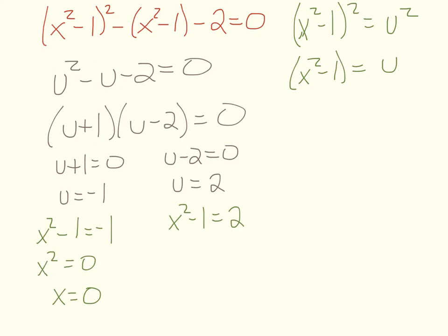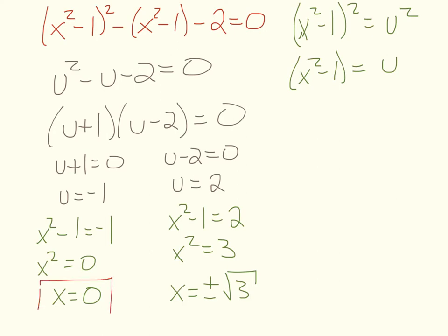Adding 1 to both sides of the first equation gives x squared equals 0, so x equals 0. Note that zero is neither positive nor negative, so there's no plus or minus. For the second equation, adding 1 gives x squared equals 3, and taking the square root gives x equals plus or minus the square root of 3. You should always check that your answers satisfy the original equation, but these two should work.